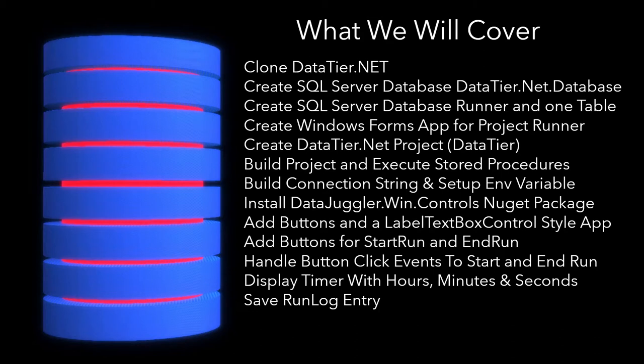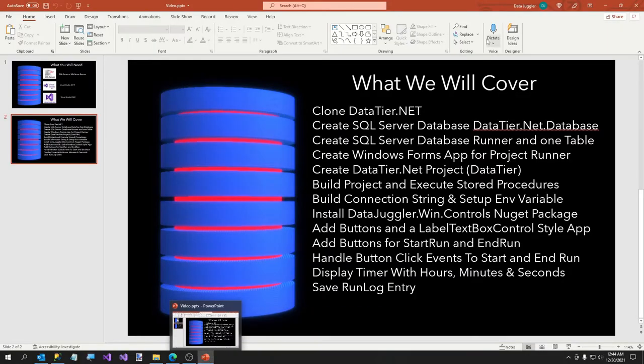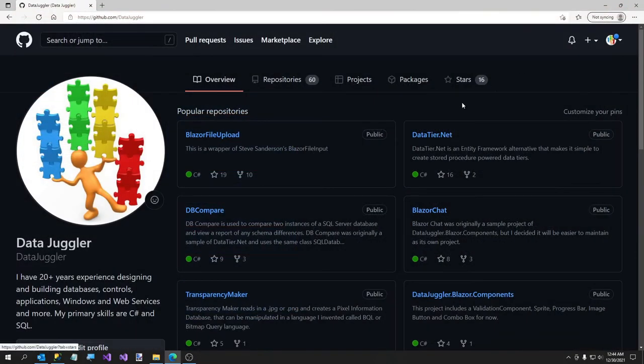Then we're going to wire up the events. The timer actually has start time, end time, and elapsed time as properties, so I don't have to do that manually. It displays hours, minutes, and seconds — I don't need millisecond precision. Then we're going to save our run log entry, but we'll need to do one lookup to get the last run log entry. There are a couple of ways to do it, but we'll go ahead and get started. That was the end of PowerPoint.